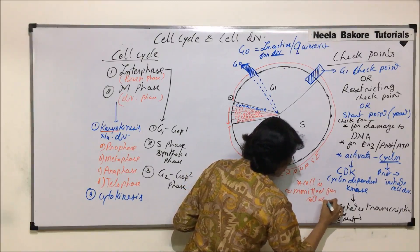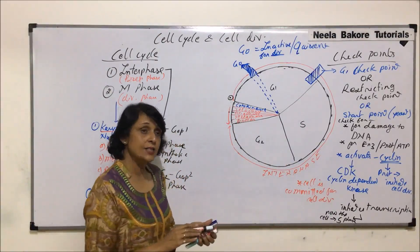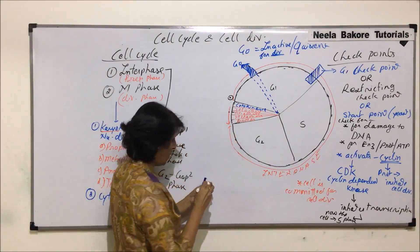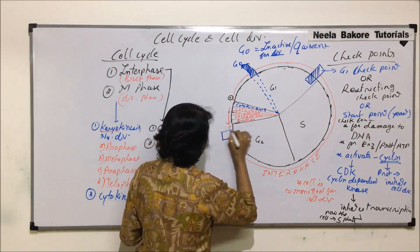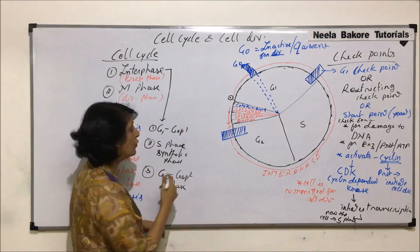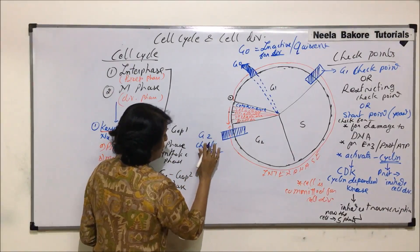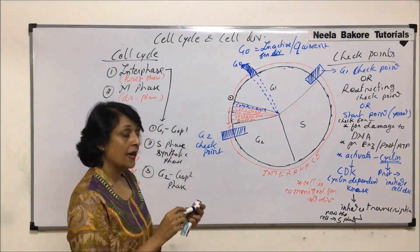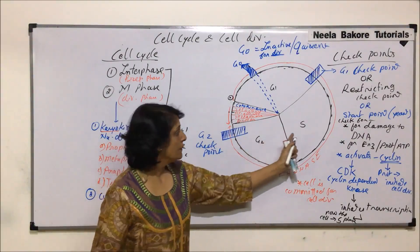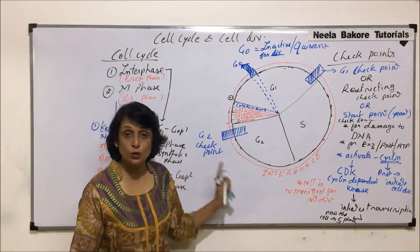That is after G1 — this is the first checkpoint. The second checkpoint is at the end of G2 phase. So the second checkpoint is in the region where G2 is about to end, and since it is in G2 phase, we call it the G2 checkpoint. There is no checkpoint in S phase. The G2 checkpoint is going to check for two things: the changes that took place in S phase, as well as what is taking place in G2.